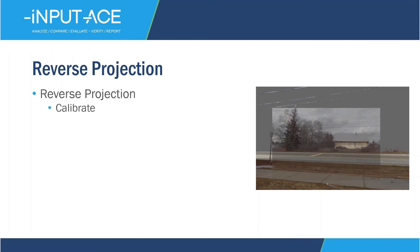That data needs to be calibrated relative to the accurate 3D background. Then the data is overlaid on top of the 3D background, and then ultimately we can measure through the image.